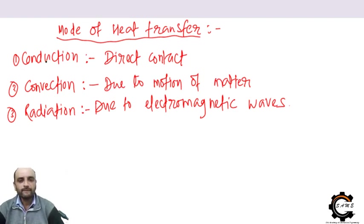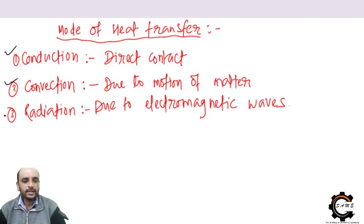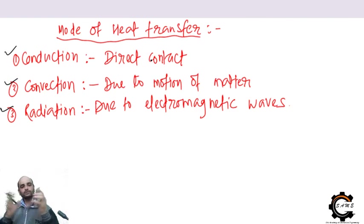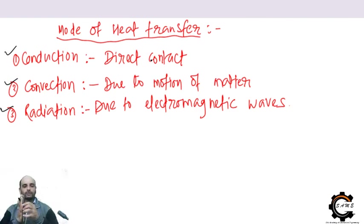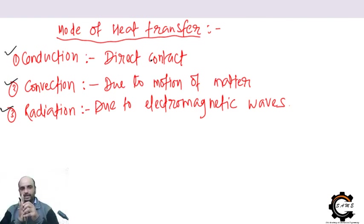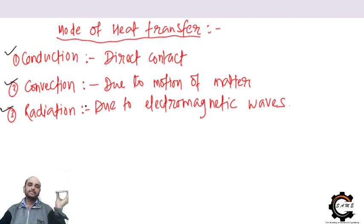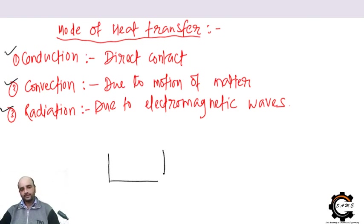Now, modes of heat transfer. There are three main modes: conduction, convection, and radiation. In conduction there is direct contact — if I touch my hand to a mobile phone, whatever heat from my hand will transfer to the phone if there is a temperature difference. Convection is due to the motion of matter. Radiation is due to electromagnetic waves.